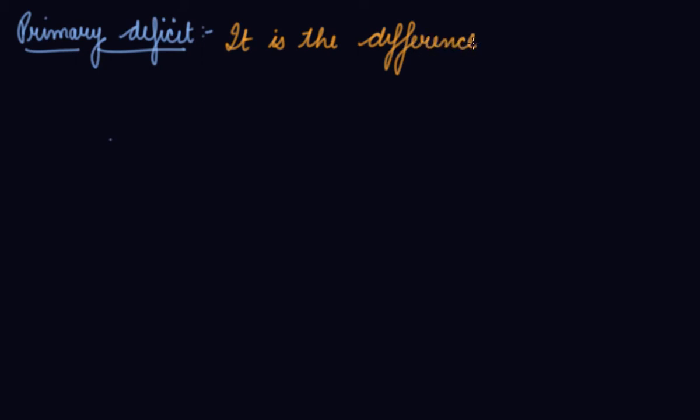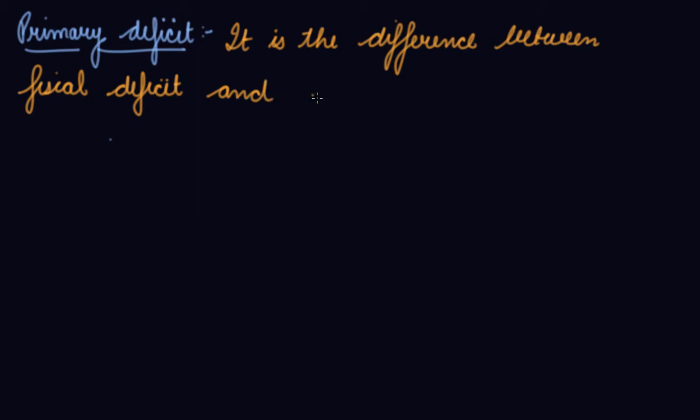In this video we will be studying about the primary deficit. What is primary deficit? Your fiscal deficit includes all the revenue and capital expenditures and revenue and capital receipts, but the primary deficit is the difference between fiscal deficit and interest payment.